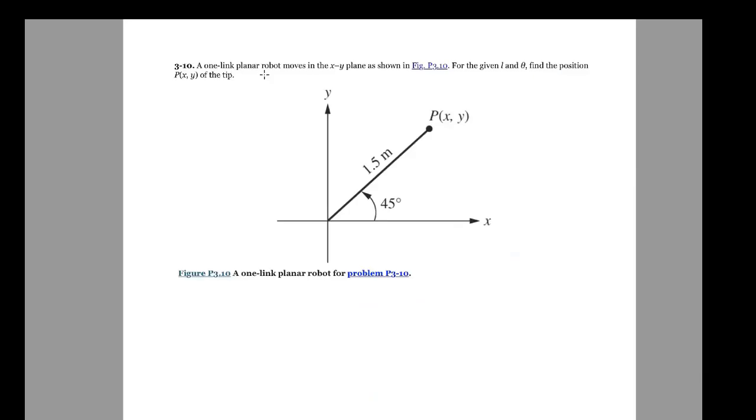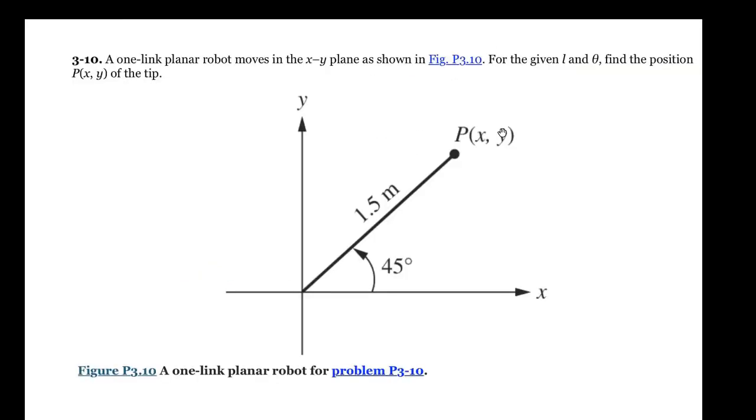A one-link planar robot moves in the XY plane as shown in this figure. For the given L, I guess this is L even though it's not labeled, and theta, this is theta. Find the position P.